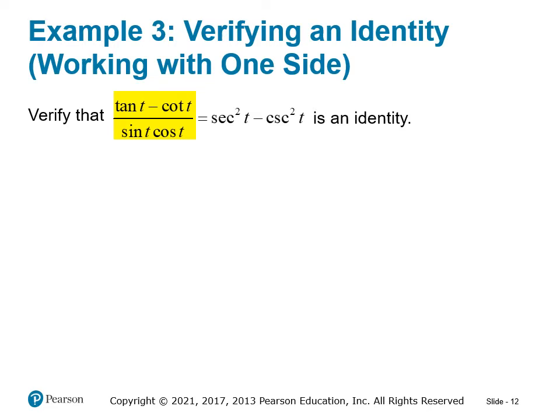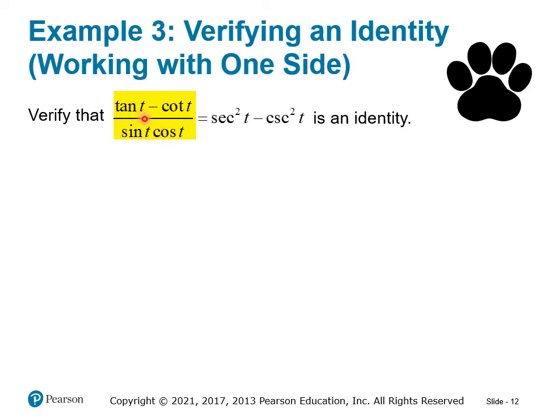Verify that (tangent T minus cotangent T) divided by (sine T cosine T) equals secant squared T minus cosecant squared T. I've highlighted the left side — try pausing to work it. Tangent is sine over cosine and cotangent is cosine over sine. Notice we have a difference in the numerator with a common denominator, so one approach is to write this as two separate fractions: tangent over the denominator minus cotangent over the denominator.